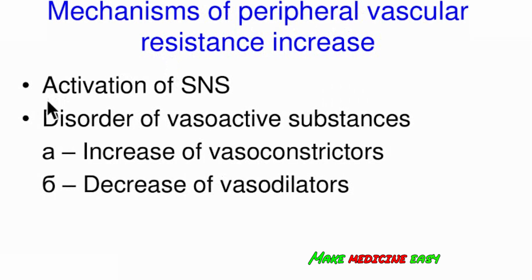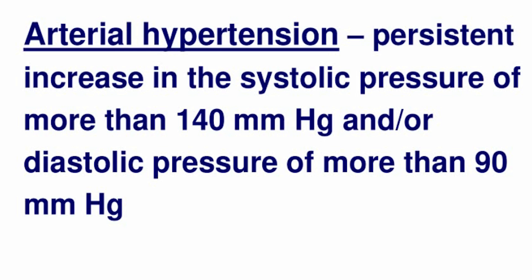The mechanism of peripheral vascular resistance increase can be due to activation of the sympathetic nervous system and increased vasoconstrictors. Arterial hypertension is defined as a pathological state of persistent increase in systolic and/or diastolic pressure — more than 140 and 90 mmHg respectively.